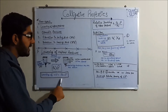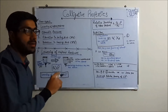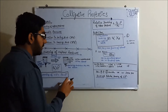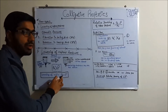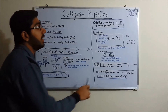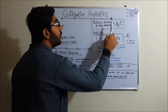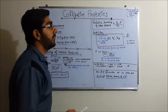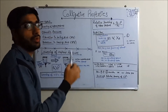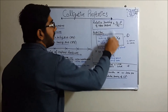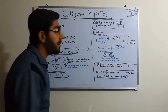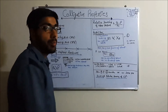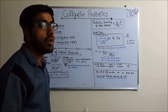Lowering of vapor pressure is equal to P⁰ minus P, as theoretically derived by Raoult's law. Relative lowering of vapor pressure is equal to P⁰ minus P divided by P⁰ — 'relative' means divided by P⁰. Raoult's law states that vapor pressure of a solution containing a non-volatile solute is directly proportional to the mole fraction of the solvent.